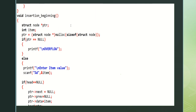Next is void insertion beginning — the node will be inserted at the beginning of the linked list. A node pointer and int item are declared. Memory is allocated to the new node. If ptr is equal to null, then it is overflow and we can't insert the node into the linked list. It jumps to the else statement. Printf: enter item value which you want to insert.